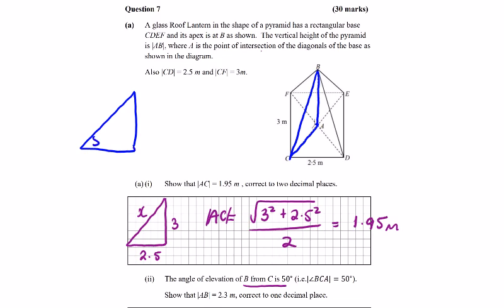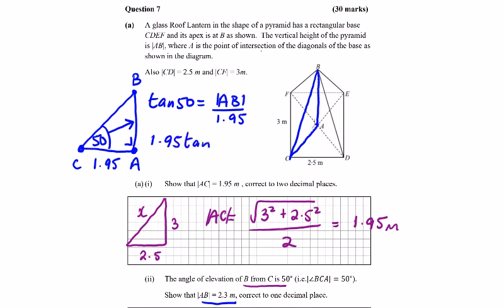Angle of elevation is 50, right angle is here. We have C and A, so we have AC as 1.95 from the previous part. We're asked to show that AB is 2.3. This is tan. We've got two straight sides here, so tan of 50 equals opposite, AB, over adjacent, which is 1.95. So 1.95 tan of 50 equals AB.